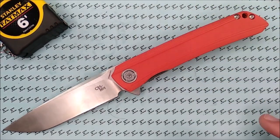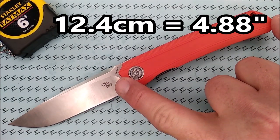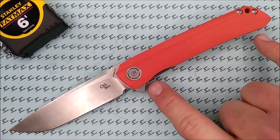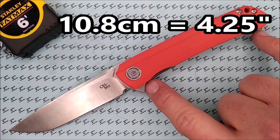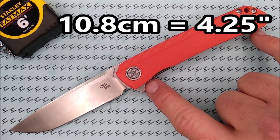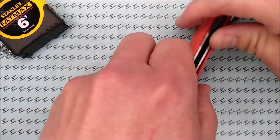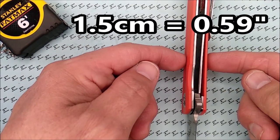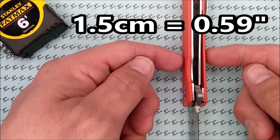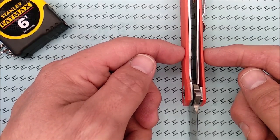The handle length is 12.4 centimeters, 4.88 inches. The grip area in here, it's about 4.25 inches, 10.8 centimeters. The handle thickness, not counting the pocket clip, 1.5 centimeters, .59 of an inch. So it is a slight bit thicker than half an inch, but not bad.